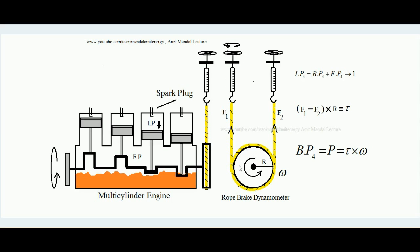The two ends of the rope are connected to two spring balances. We can tighten the rope by rotating a nut-screw control arrangement — tightening increases rope tension, loosening decreases it. When the drum rotates inside the wound rope, friction is associated with it. The power developed by the engine fights against the friction of the wound rope over the drum. The spring balances show forces F1 and F2, with R as the radius of the drum.